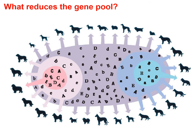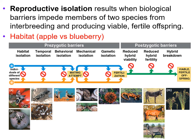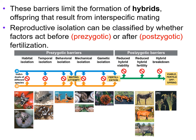So what can reduce the gene pool? Reproductive isolation results when biological barriers impede members of two species from interbreeding and producing viable, fertile offspring. The first example we'll look at is habitat — the fly that lives on the apple versus the fly that lives on the blueberry. These barriers limit the formation of hybrids, which are offspring that result from interspecific mating.